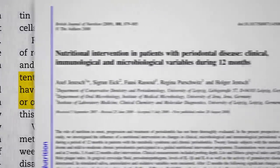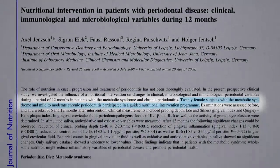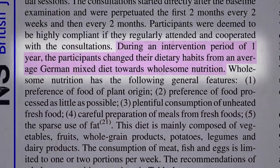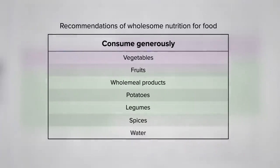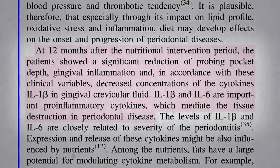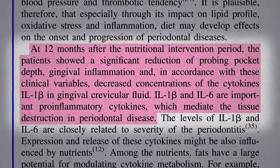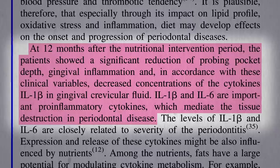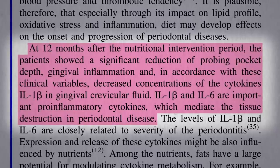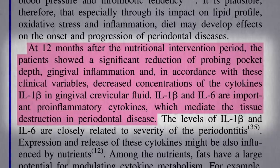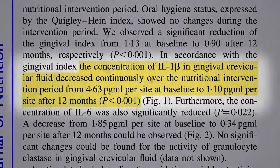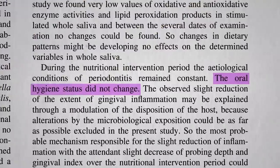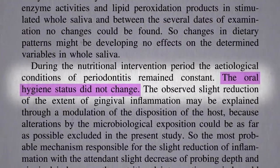German researchers took 20 women with mild to moderate chronic periodontitis, and for a year tried to transition their diets towards more wholesome nutrition — meaning more plant foods, more whole foods, more fresh foods, centering their diets around vegetables and fruit, whole grains, potatoes, and legumes like beans, split peas, chickpeas, and lentils. After 12 months, patients showed a significant reduction of probing pocket depth and gingival inflammation, and — measured for the first time — decreased concentrations of inflammatory chemicals inside the crevice between the tooth and gums, thought responsible for tissue destruction in periodontal disease, a decrease by as much as 75%. All the while, their oral hygiene status didn't change, suggesting it was the diet that did it.